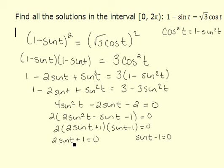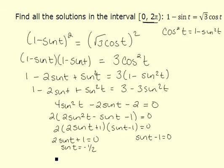If 2 sine t plus 1 is equal to 0, we want sine t to be equal to negative 1 half. In the interval between 0 and 2π, that would give us values in quadrants 3 and 4 with a reference angle of π over 6, or t is equal to 7π over 6 and 11π over 6.